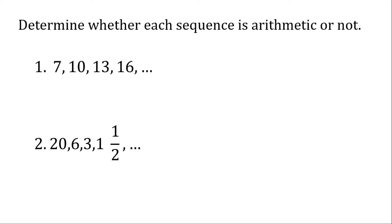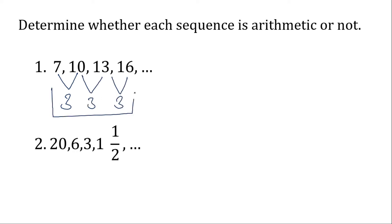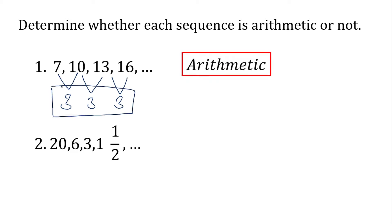Let's focus first on number 1. All you have to do is check if you subtract the first term from the next term. So we have 10 minus 7, the answer is 3. 13 minus 10 is 3. 16 minus 13 is 3. Since we get the same difference, therefore it is an arithmetic sequence.